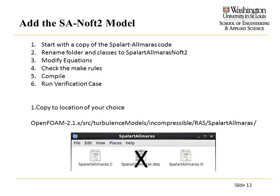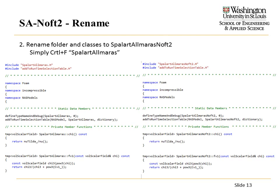I'll go through the procedure here. First, we're going to copy the source files that come with OpenFOAM to some other location. There are just two files: the .C file and the header file. We'll copy those and get rid of the dependency file because we'll create our own later. Then we'll rename 'SpalartAllmaras' to whatever our model is going to be — I chose 'SpalartAllmaras-noFT2.' You literally just use Control+F, find every instance of 'SpalartAllmaras,' and rename it to 'SpalartAllmaras-noFT2.' At this point, we haven't made any changes to equations — we've just renamed everything to make it our own model.